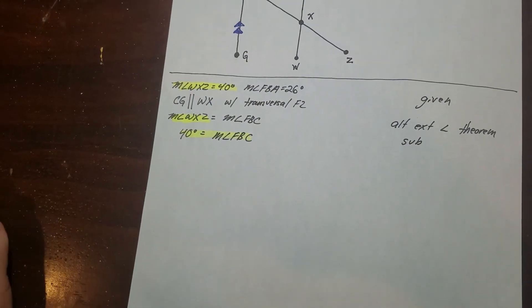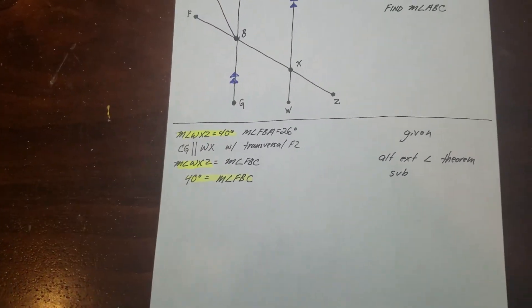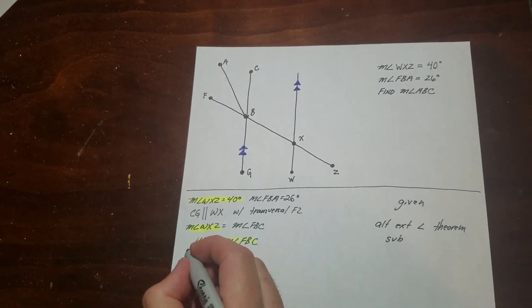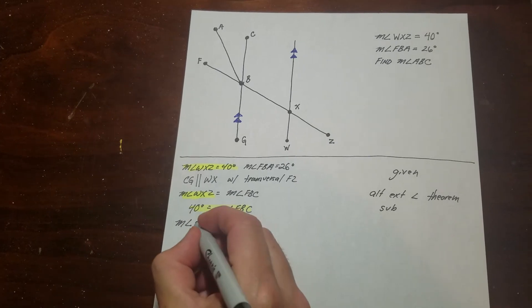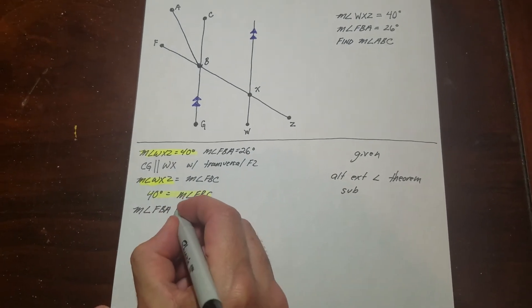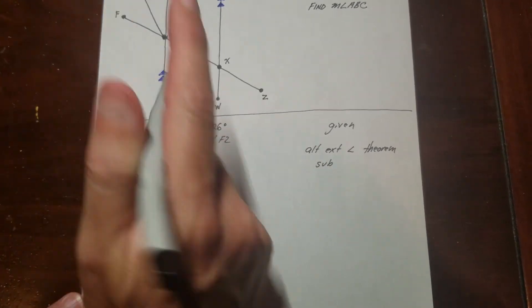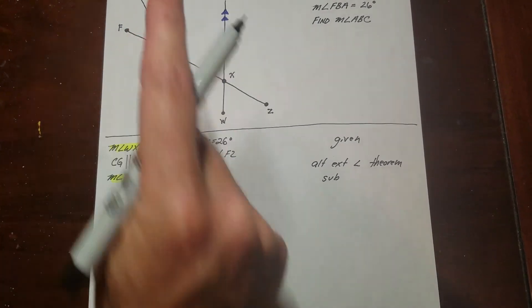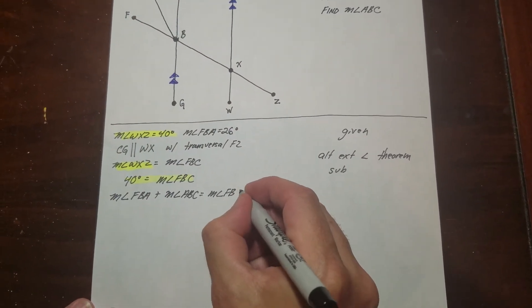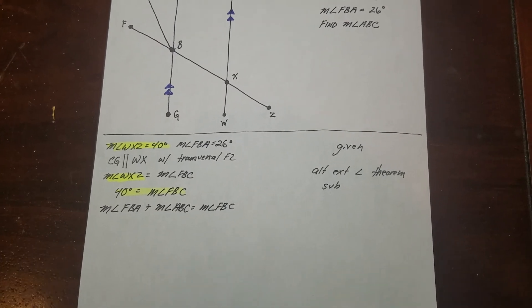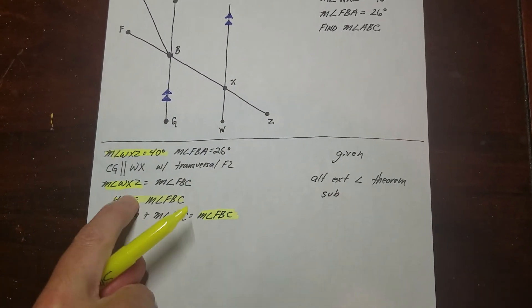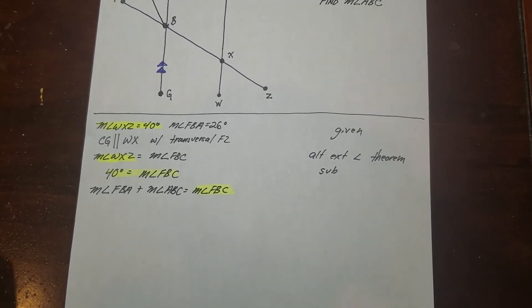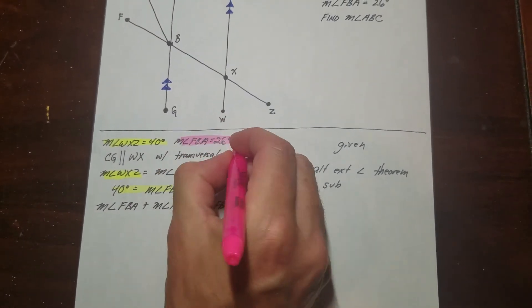So I also know FBA, which is that one there. So I know that this angle here plus this ABC angle is equal to the FBC. So I'm just going to go ahead and write that down. So angle FBA plus the measure of angle ABC is equal to the measure of angle FBC. Which is this one we just figured out. So we know that this one here has a value of 40, just like the one over here. We now know that FBA up here is 26.